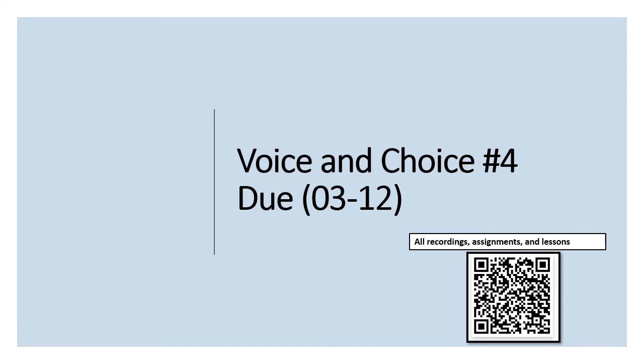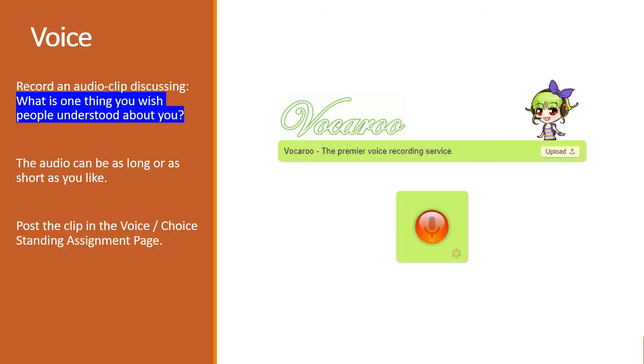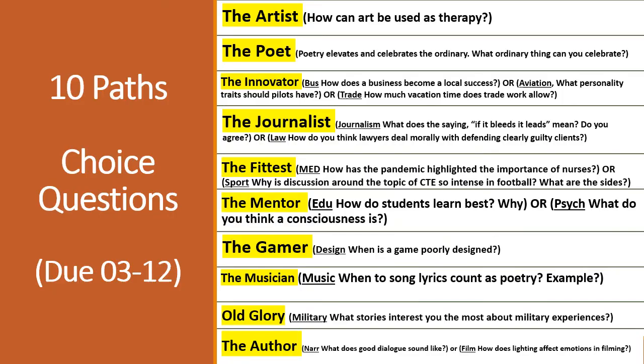We have a new voice and choice assignment. The voice prompt is: what is one thing you wish people understood about you? There are all new choice prompts for all ten paths. For the artist: how can art be used as therapy? For the poet: poetry elevates and celebrates the ordinary — what ordinary thing can you celebrate? For the innovator: how does a business become a local success? For aviation: what personality traits should pilots have?